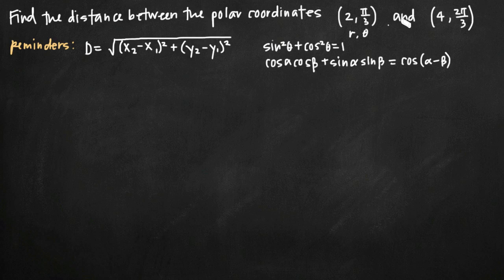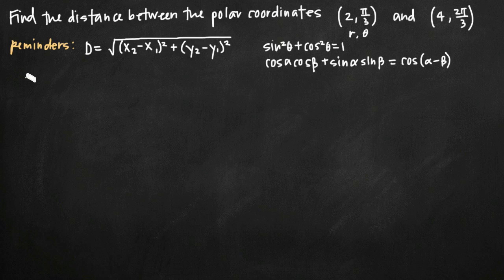In order to calculate the distance between these two points, we're going to need a distance formula in terms of polar coordinates. The distance formula we have here is in terms of Cartesian coordinates, and it's pretty quick to derive the polar version from it — I wanted to show you how we do it. To convert between polar and Cartesian coordinates, we say that x = r·cosθ and y = r·sinθ, and we make those substitutions for x and y.